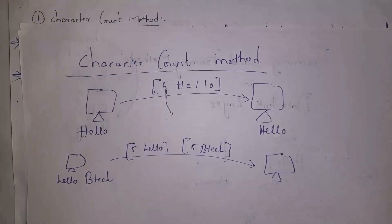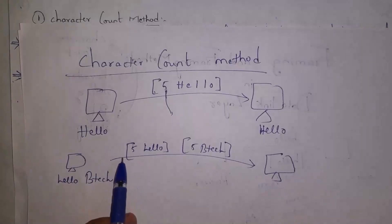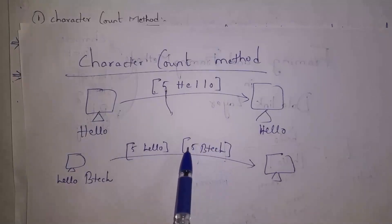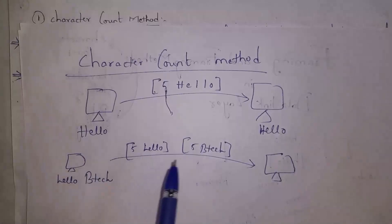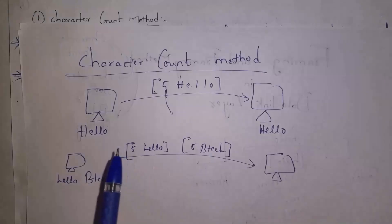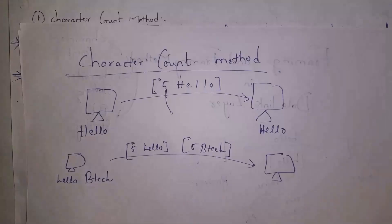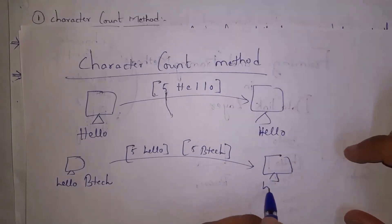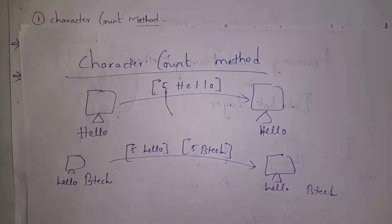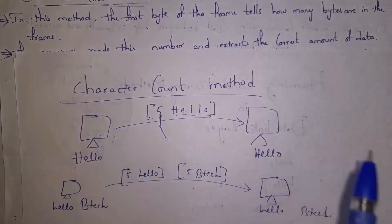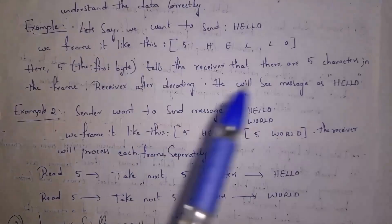Whenever the receiver receives data, it first reads the count and then based on that count reads the data. For example, if the sender sends 'hello btech', the character count method converts it to '5 hello' and '5 btech', where each 5 is the count of those characters. The receiver reads 5 and understands this frame contains five characters, so it reads five characters. Similarly for the next frame, it extracts the other five characters, receiving 'hello btech'. So in the Character Count Method, the first byte tells how many characters are in the frame.